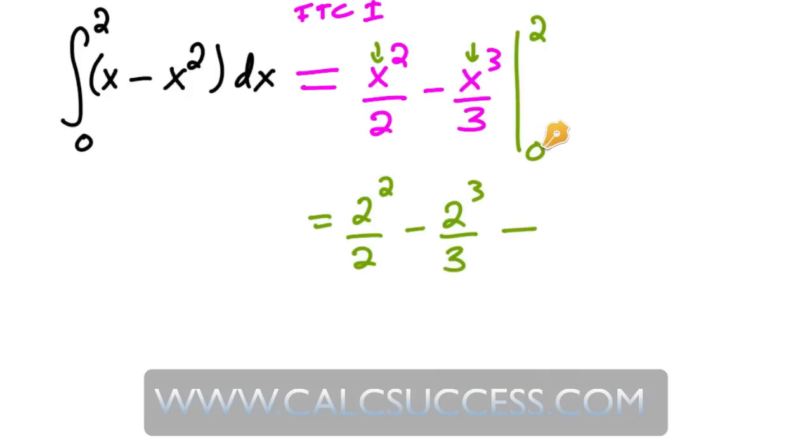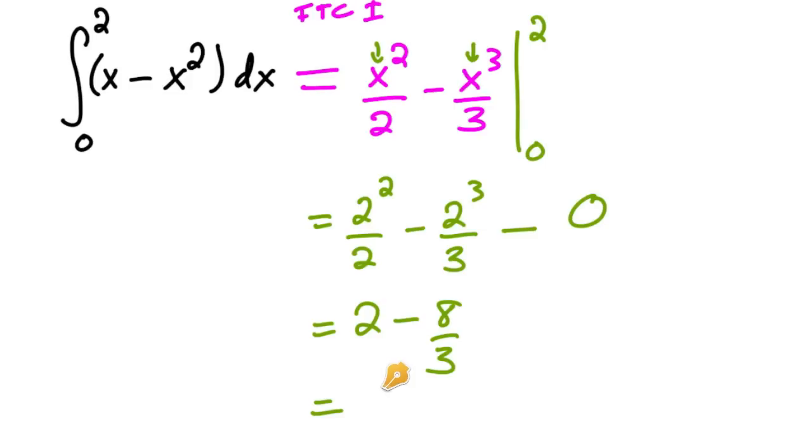And then minus, then you plug in 0, but that's just going to equal 0 in this case. And so here you have 2 minus 8 thirds, and 2, well that's 6 thirds, so that's going to be negative 2 thirds.